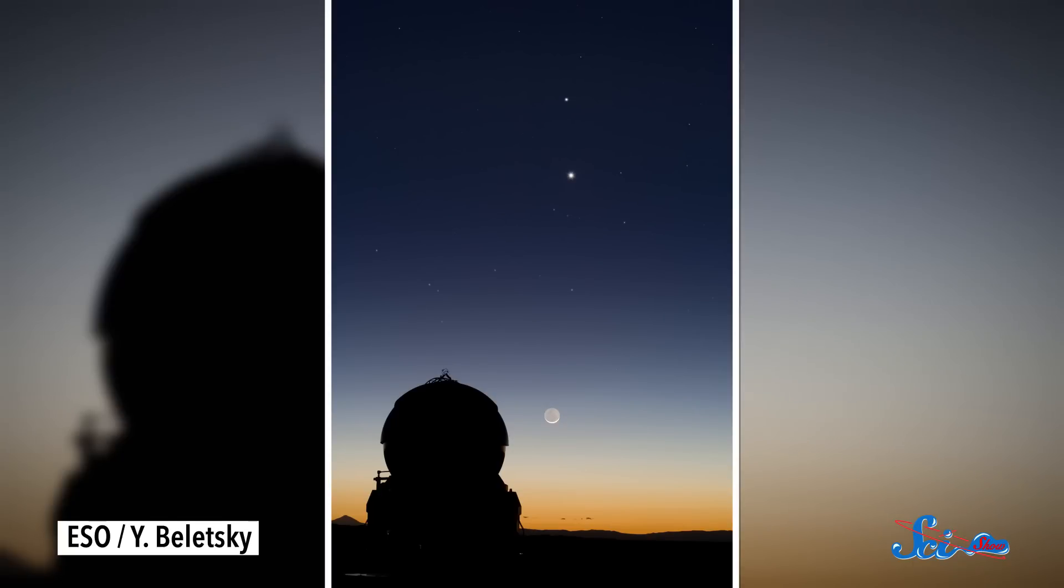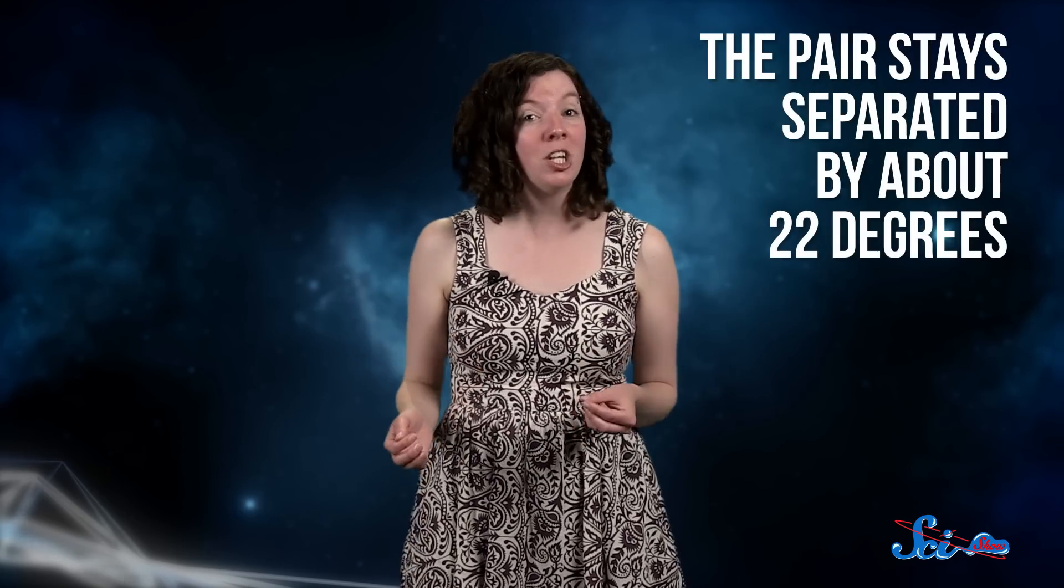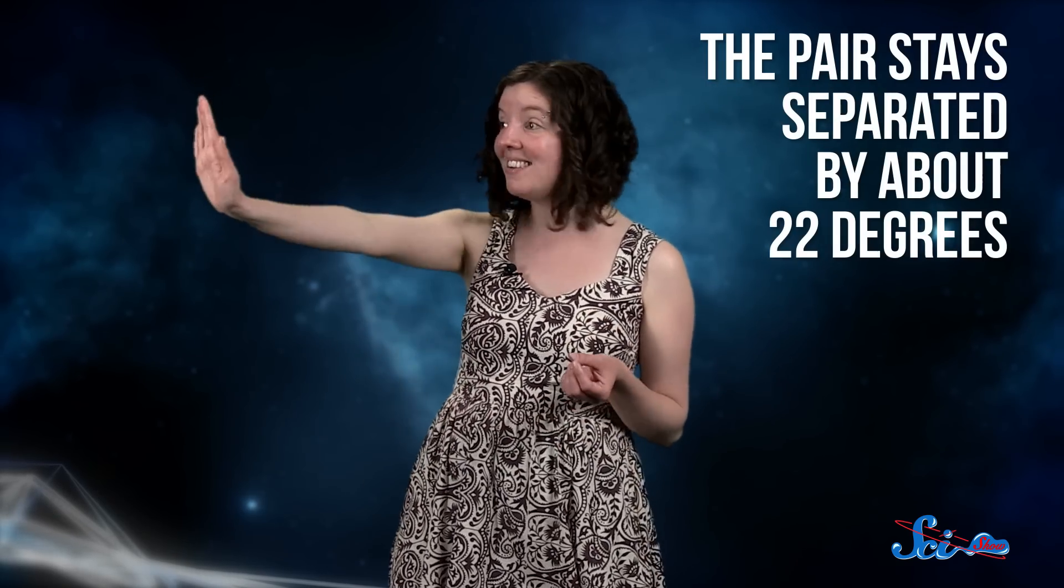To find Mercury in the sky, head outdoors around an hour after sunset, and then look for Venus, which should be a bright point of light toward west-northwest. Mercury is below and to the right, separated by 22 degrees, roughly the width of a hand held at arm's length.